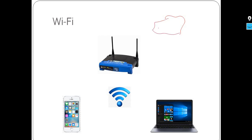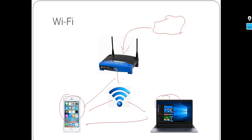As a basic example: you have the internet cloud, and your router is connected to the internet. The router broadcasts a Wi-Fi signal, and multiple devices can connect to it. All devices connected to the same router share internet access through Wi-Fi. This is what Wi-Fi is — wireless LAN giving us internet connectivity.